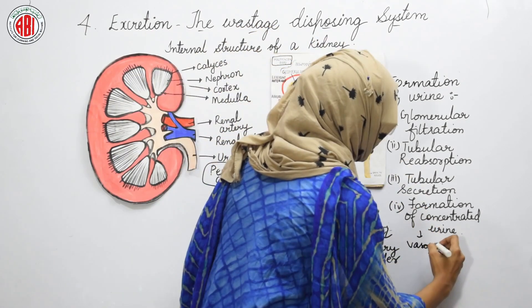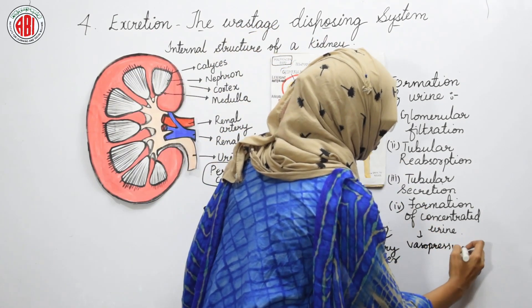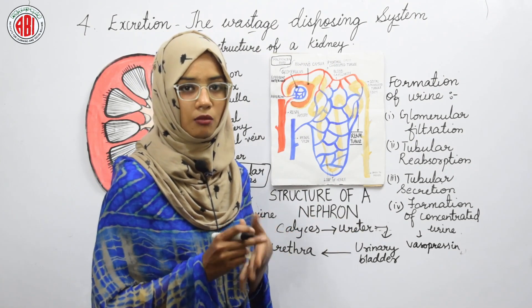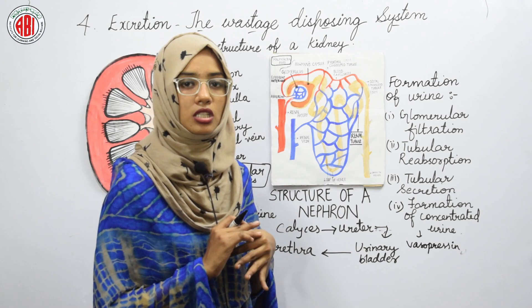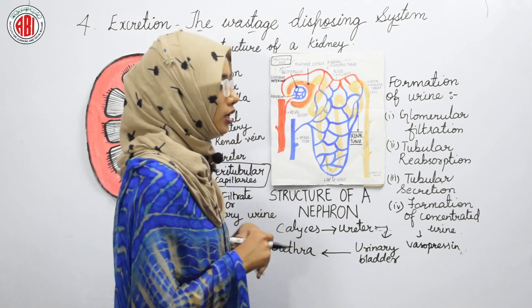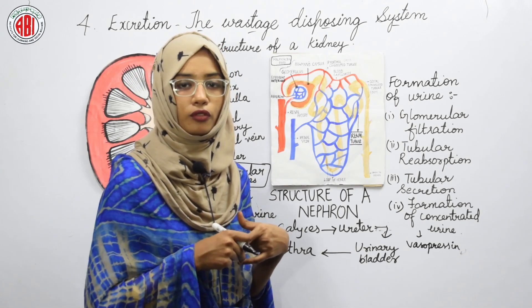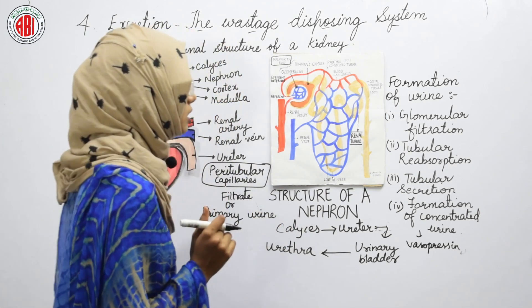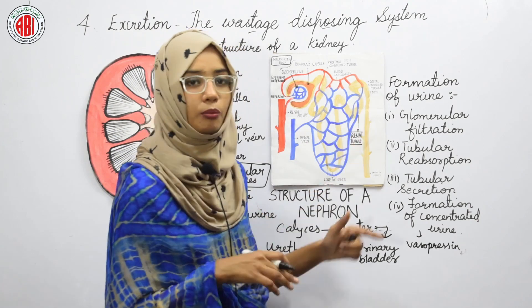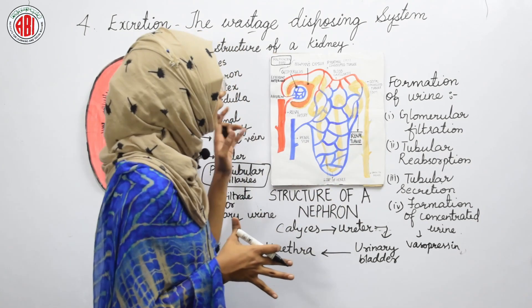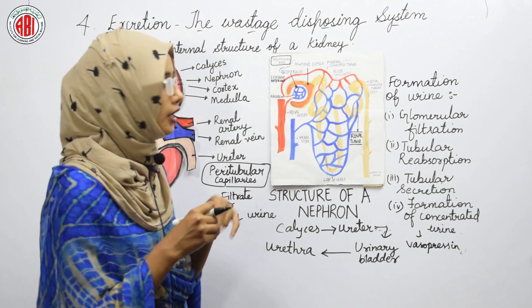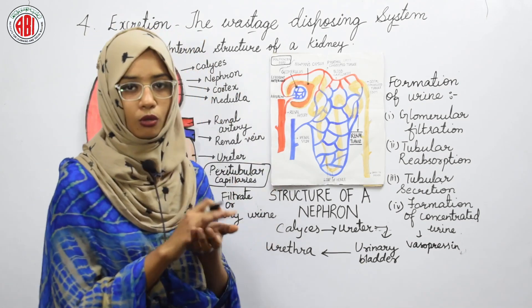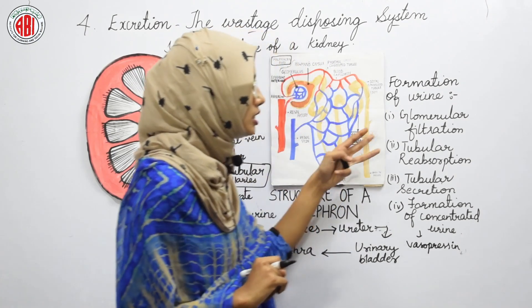Vasopressin is released only when urine has to be passed out. In the deficiency of vasopressin in the human body, some disorders can be seen — specifically, an extra amount of water is released from the body, and that condition is called diabetes insipidus. After the urine is formed, the remaining blood is transferred back to other parts through the efferent arterioles. For formation of urine, we remember four steps.